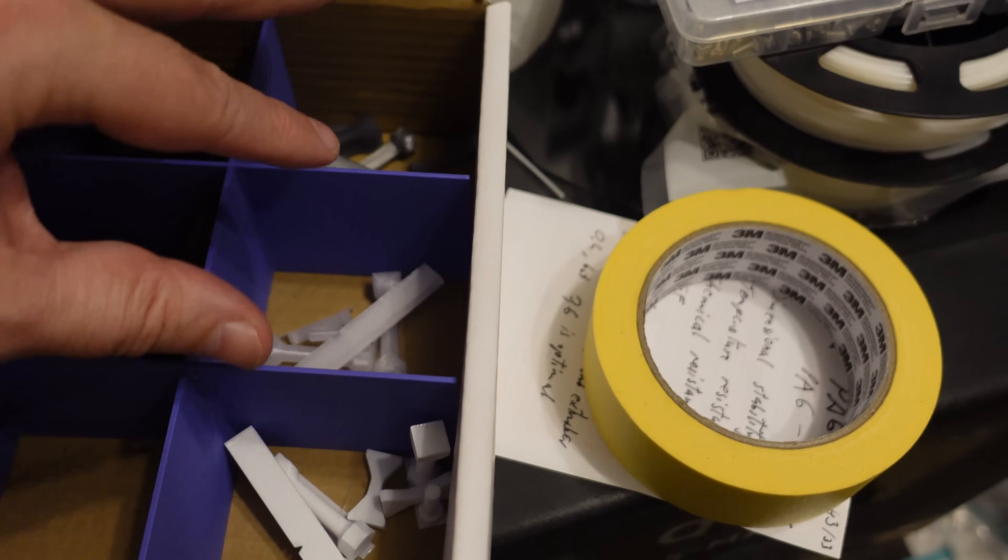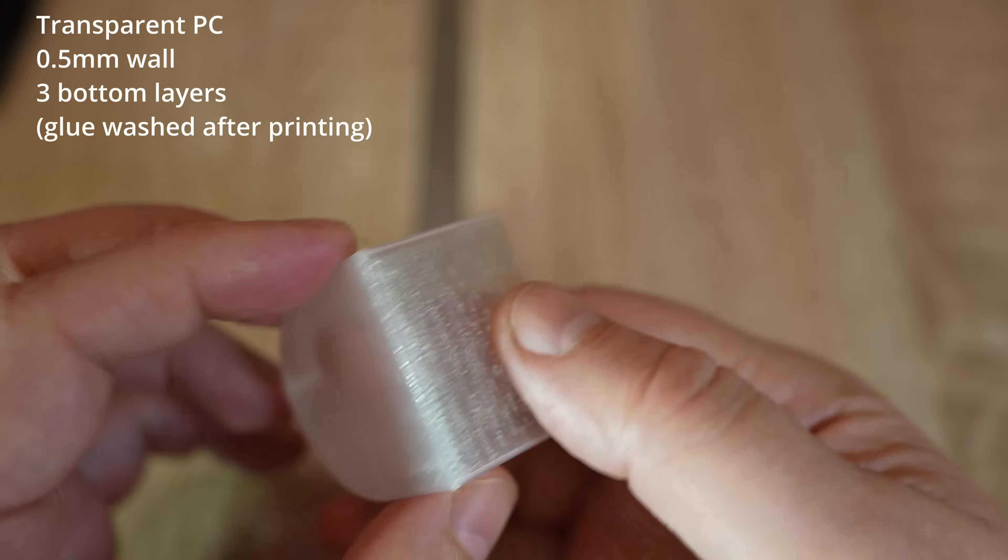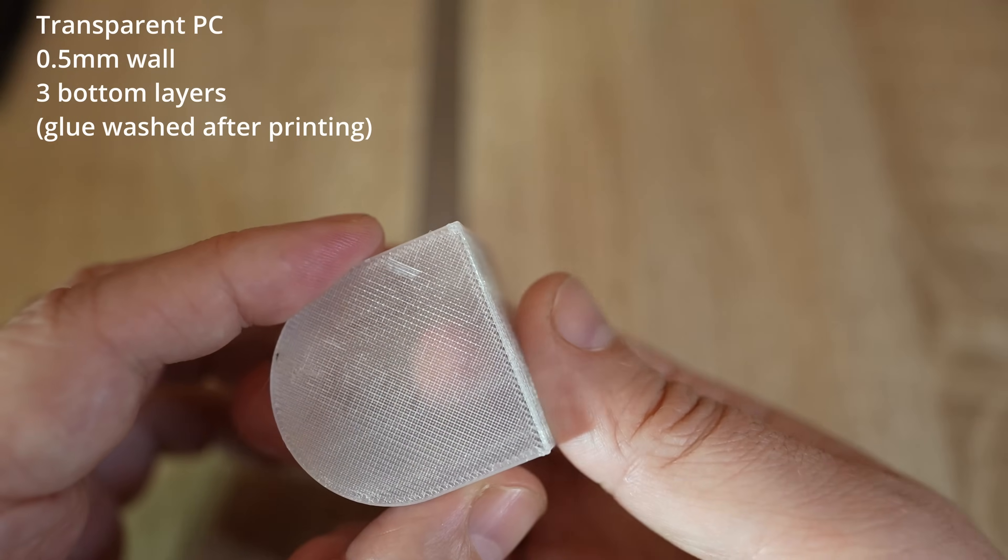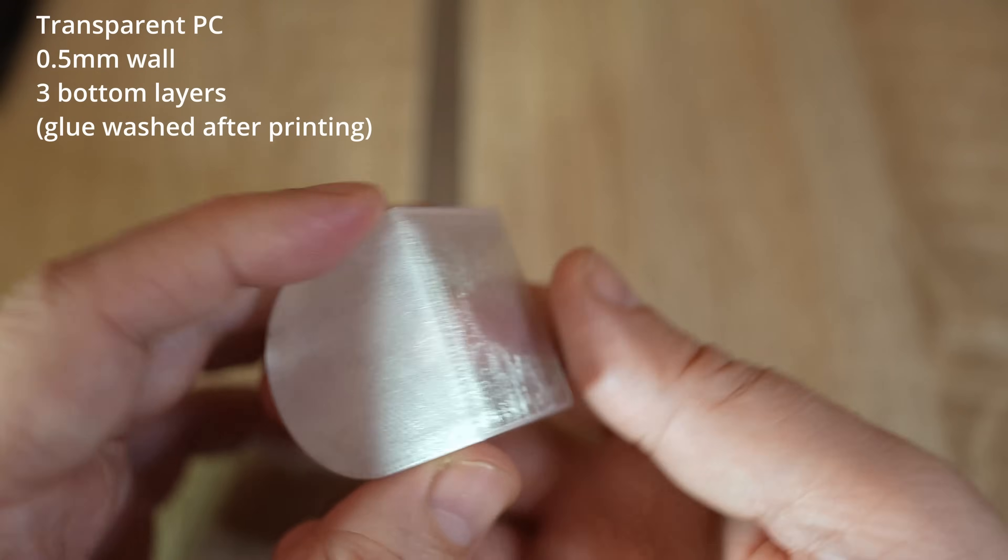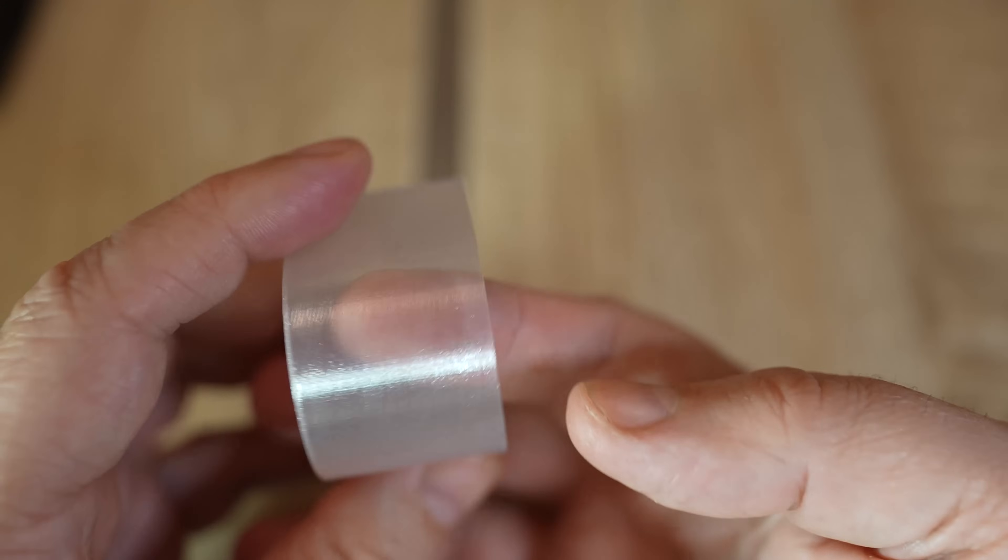Objects are ready for the mechanical testing. Also I was curious about the transparency. This was printed in a vase mode and it has three bottom layers. And this is the side wall, flat and also curved.